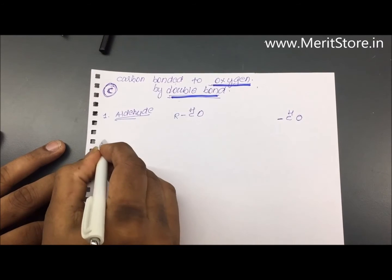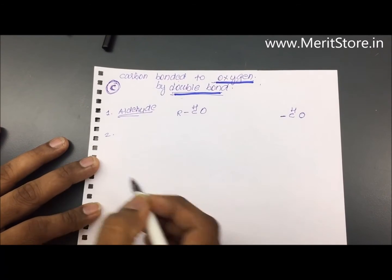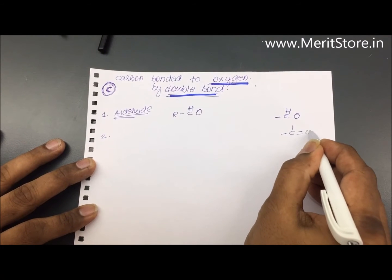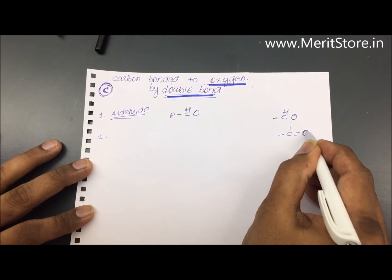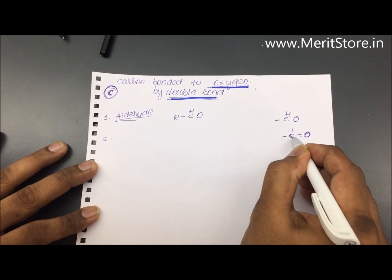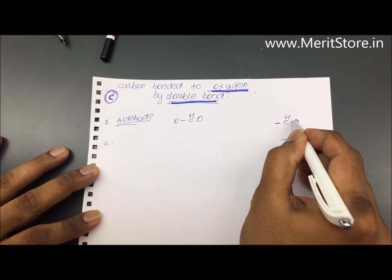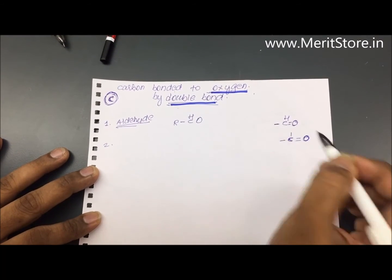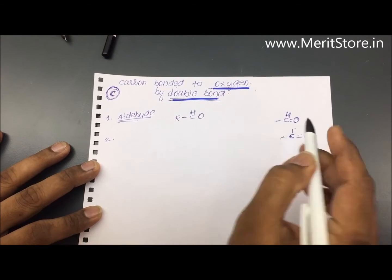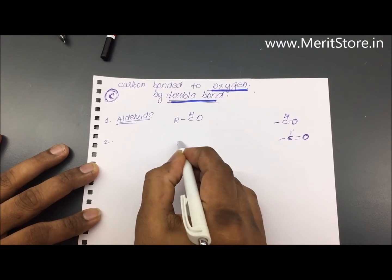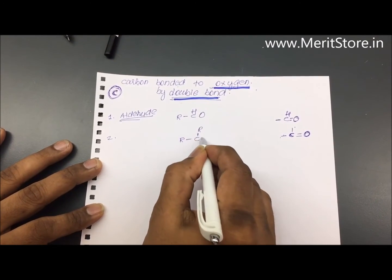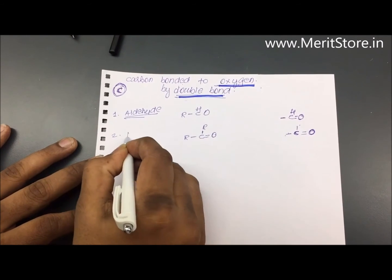The second is C double bond O, where oxygen has a bond with carbon. Here, both sides are R groups — written as R-CO-R. These are called ketones.